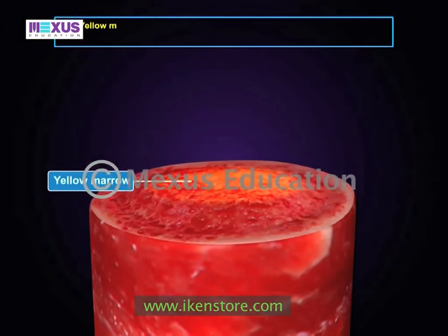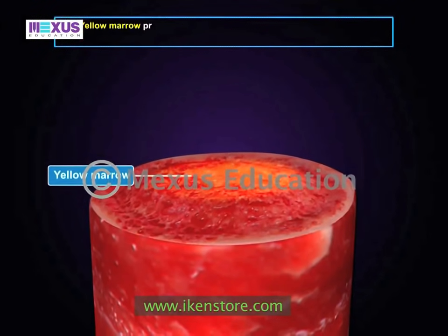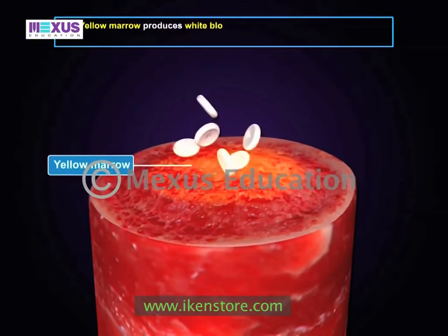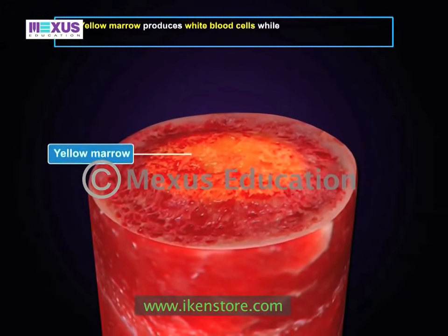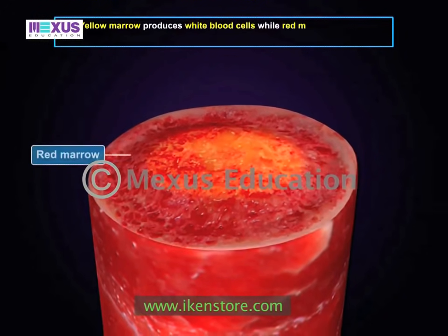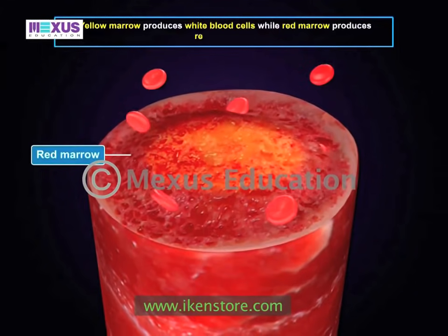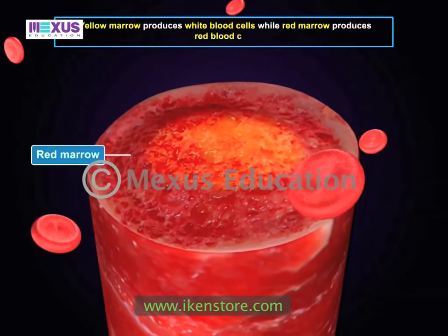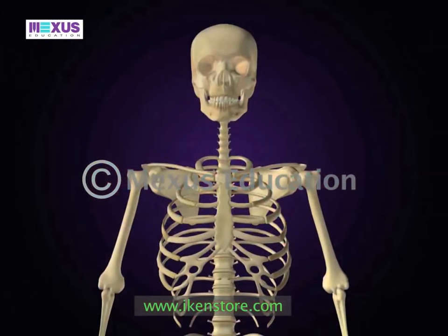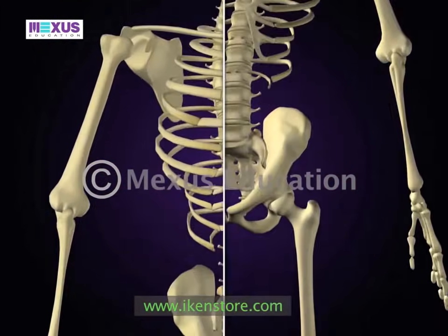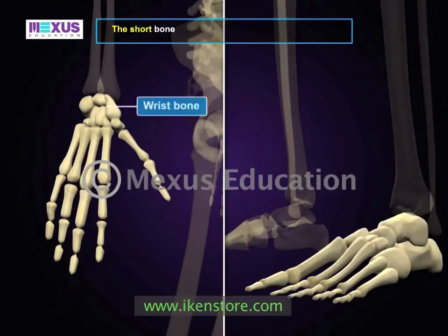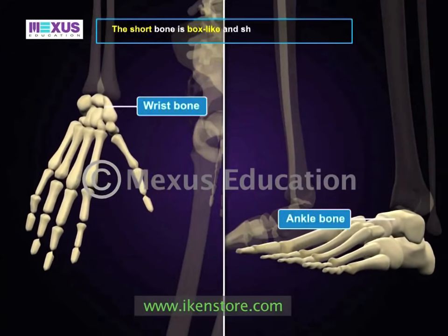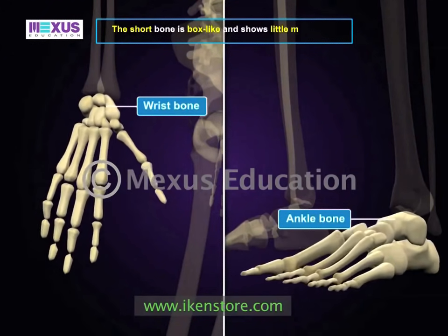The medullary cavity contains bone marrow which stores fat. Yellow marrow, made of adipose tissue and blood vessels, produces white blood cells. Red marrow, on the other hand, produces red blood cells.